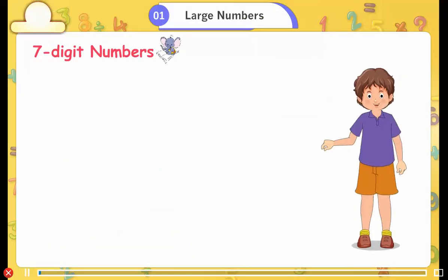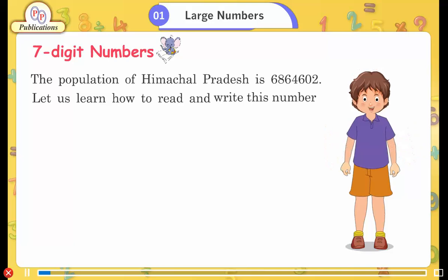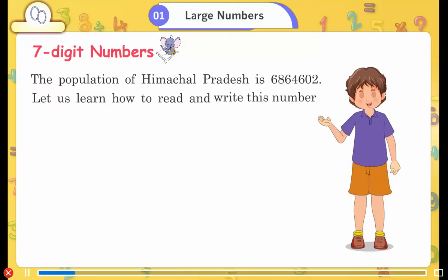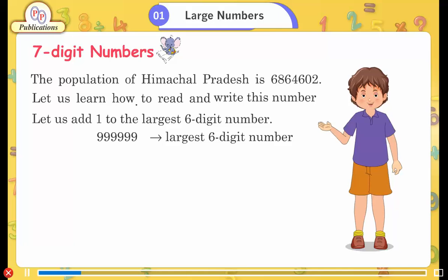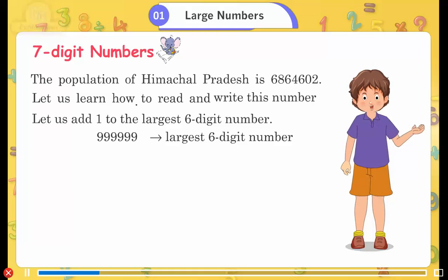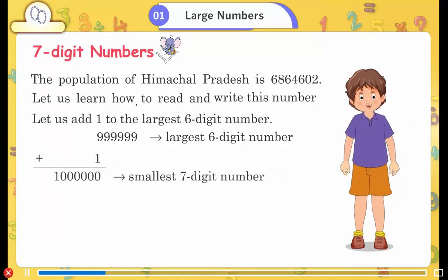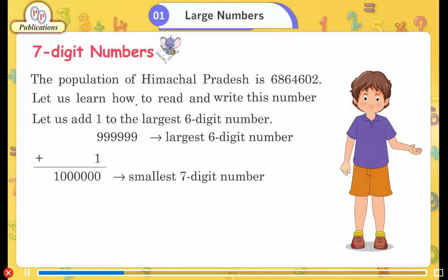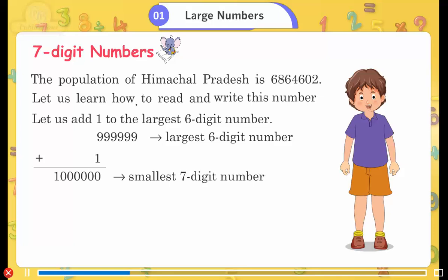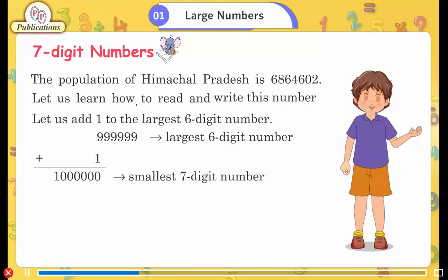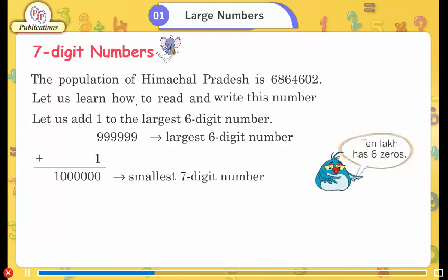Seven-digit numbers. The population of Himachal Pradesh is 68 lakhs 64,602. Let us learn how to read and write this number. Let us add one to the largest six-digit number: 9,99,999 plus 1 equals 10 lakhs. 9,99,999 is the largest six-digit number. 10 lakh is the smallest seven-digit number, and it has six zeros.